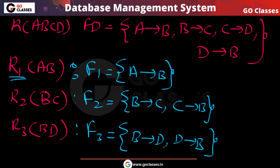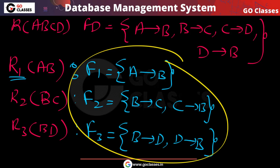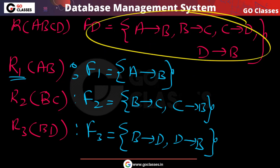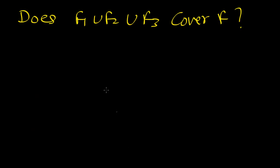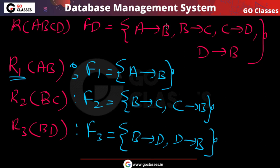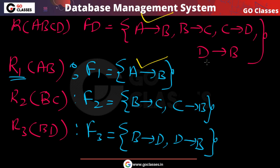Now we need to check: does F1 ∪ F2 ∪ F3 cover F? The union contains: A→B, C→B, B→C, B→D, and D→B. We can see that A→B is covered in F1, B→C and C→B are covered in F2, and B→D and D→B are covered in F3. Most functional dependencies are already covered.